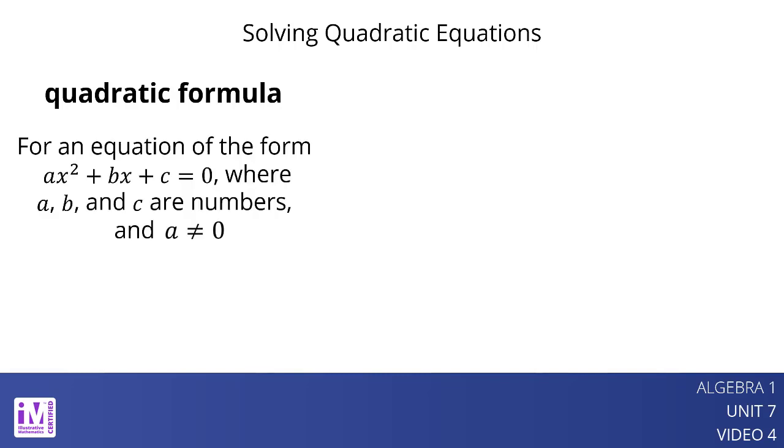For an equation of the form ax squared plus bx plus c equals 0, where a, b, and c are numbers and a is not equal to 0, the solutions are given by x equals negative b plus or minus the square root of b squared minus 4ac, all over 2 times a.